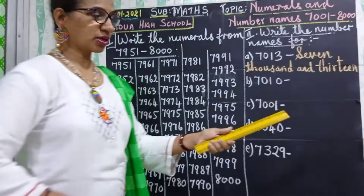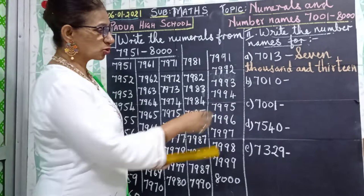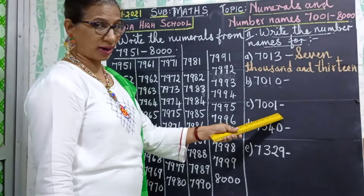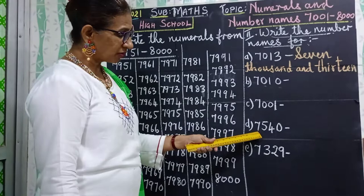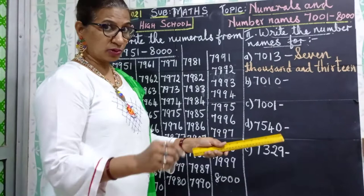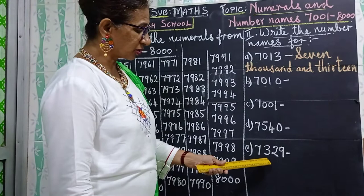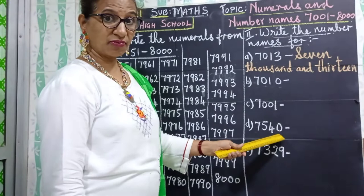Now here you have 7000 and 10 — there is no 100. So you will be writing seven thousand and ten. Then you have 7001 — 7000 and 1, there are no hundreds, no tens. Now here you have 7540. These are 4-digit numbers. Then you have 7329. I hope you know the spelling of 40: F-O-R-T-Y.